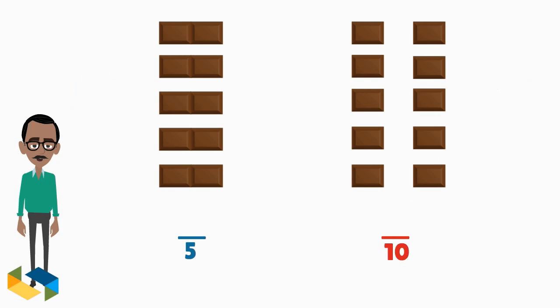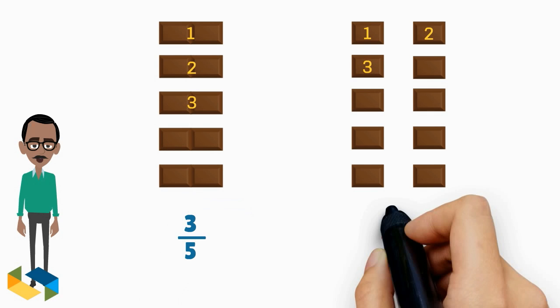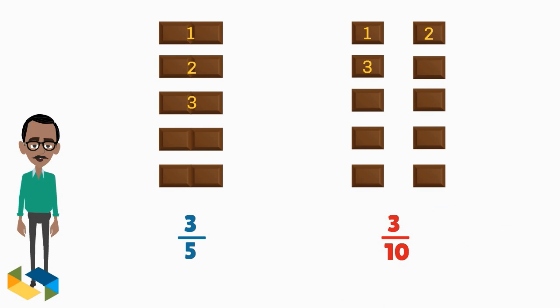Now, because we want the same numerator value, let's say we count 3 parts in each of these chocolate bars to get the fractions 3 upon 5 and 3 upon 10.